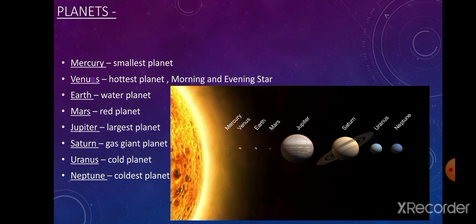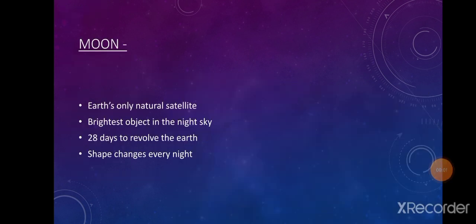Uranus is the only planet that rotates on its axis from east to west. It has at least 10 thin, uniform black rings made of dust, and it is a very cold planet. Neptune is known as the coldest planet in the solar system and is the farthest planet from the sun.